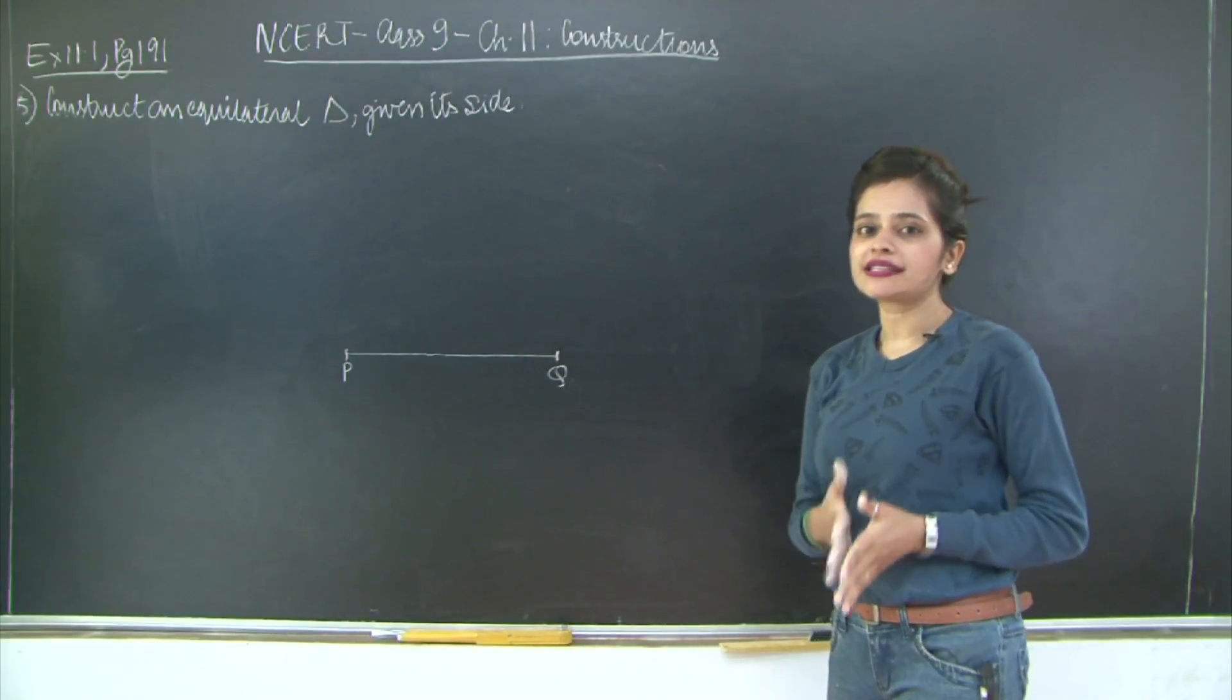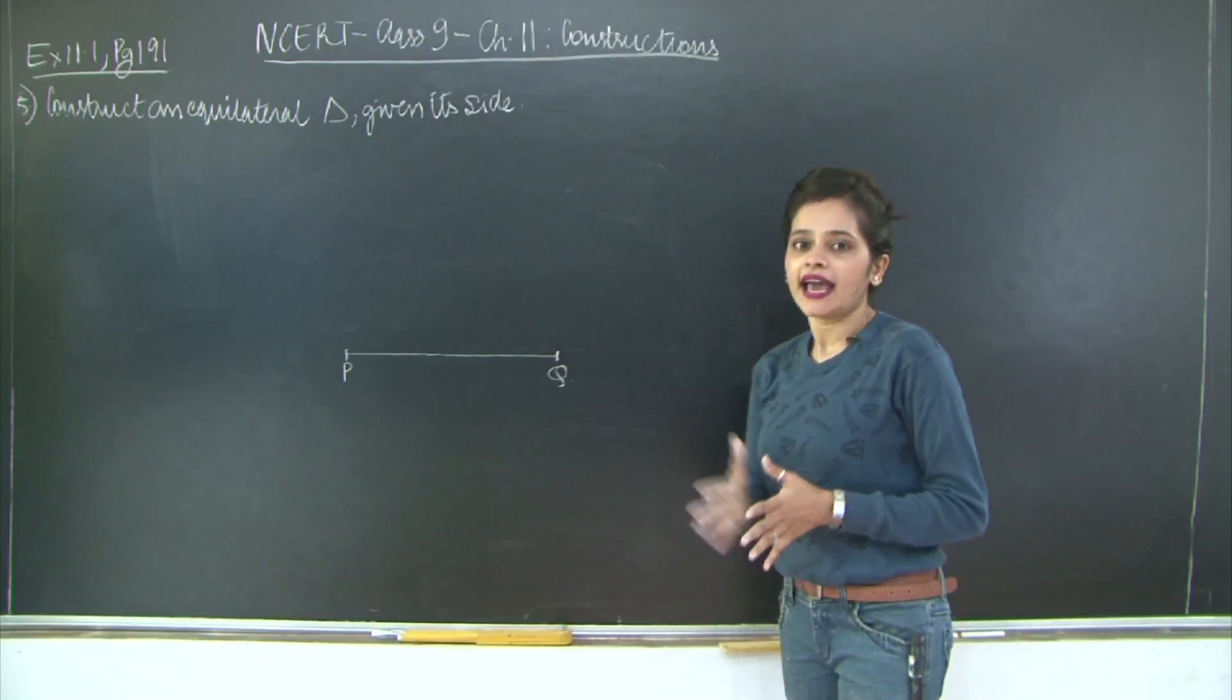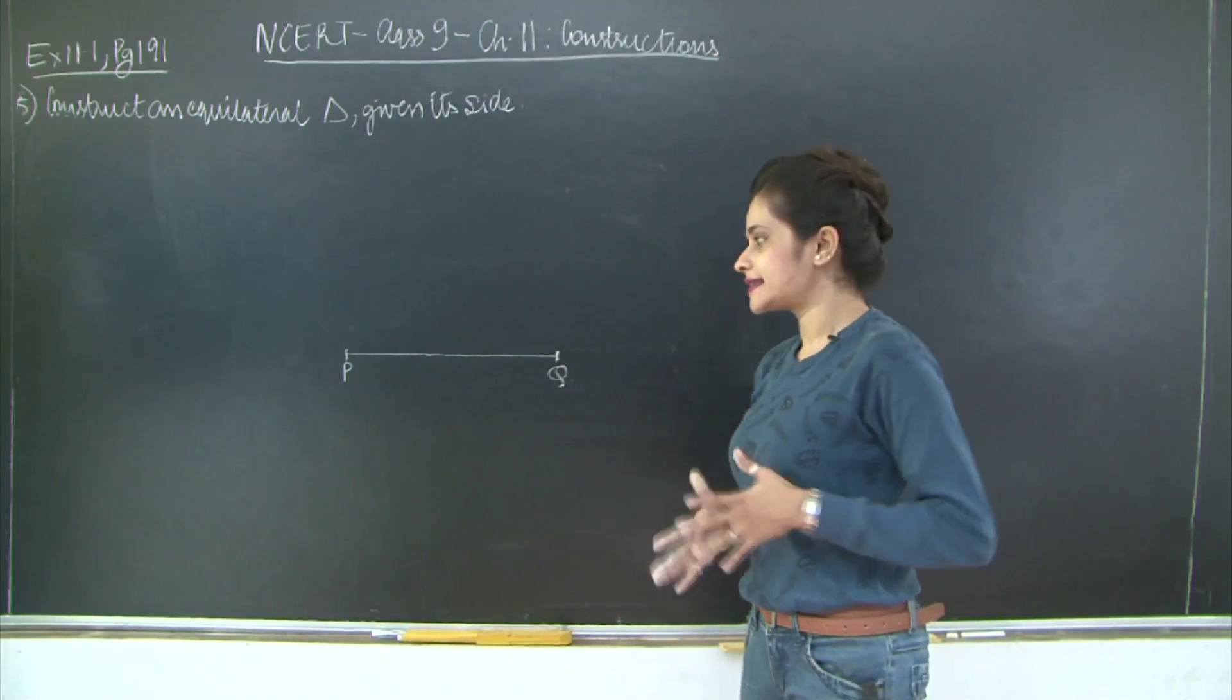So what do we know about an equilateral triangle? All the sides and all the angles of the triangle are equal, and each angle is equal to 60 degrees.